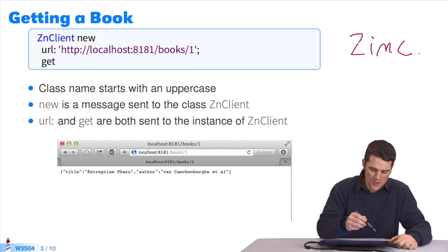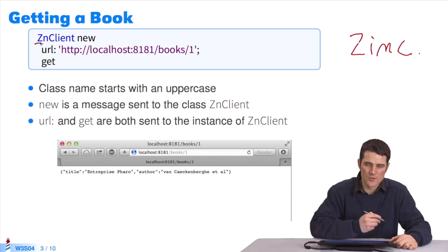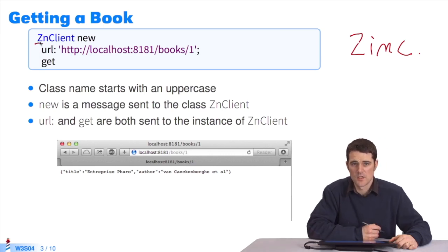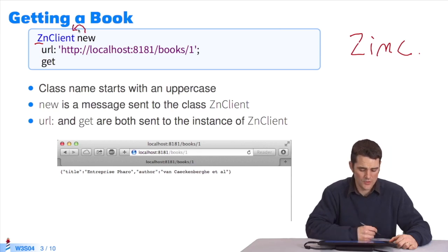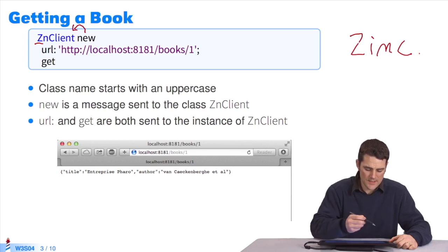First, we can see ZnClient is a class. So it starts with uppercase Z as we saw previously. Names of classes and global variables start with uppercase. You send the message new to this class. It will create a new instance of ZnClient. To this new instance, you send the first message URL with a parameter, which is a string.